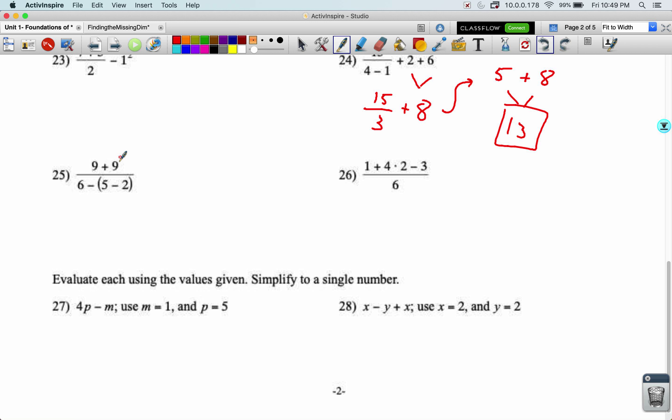Let's do 25. So I can do the nine plus nine on the top. There's nothing stopping me from doing that. And then I got to do the five minus two because that's the most inside parentheses there. That's going to become a three. Now I've got 18 over three becomes a six.